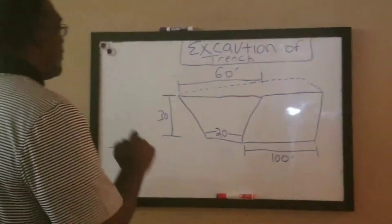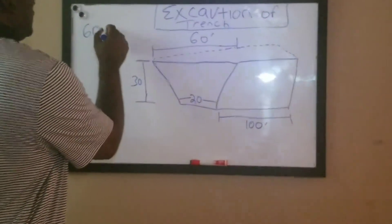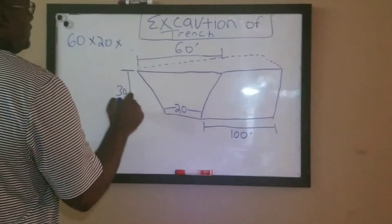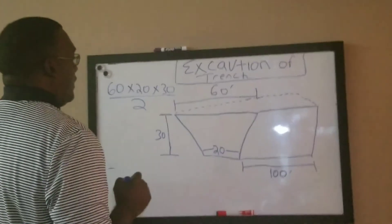So the area of a trapezoid is the 60 at the top times the 20 at the bottom times the height, all that divided by 2.